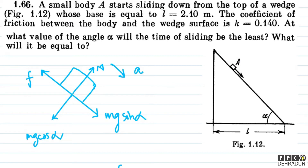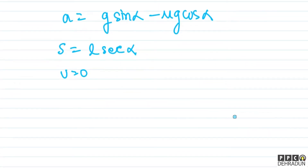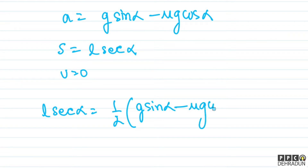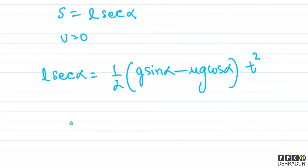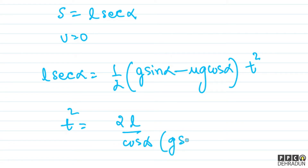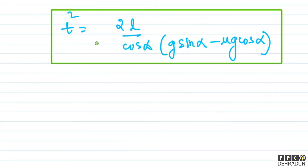The initial velocity u is zero. Using s = ut + ½at², with the distance along the incline being L sec alpha, we get: L sec alpha = ½ (g sin alpha − mu g cos alpha) t². Therefore, t² equals 2L sec alpha divided by (g sin alpha − mu g cos alpha).